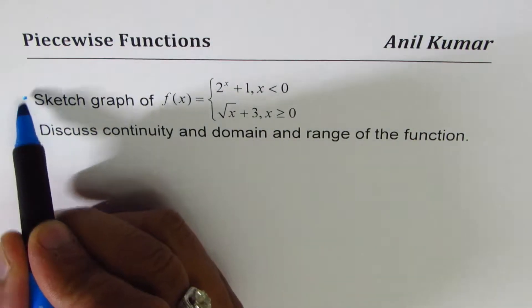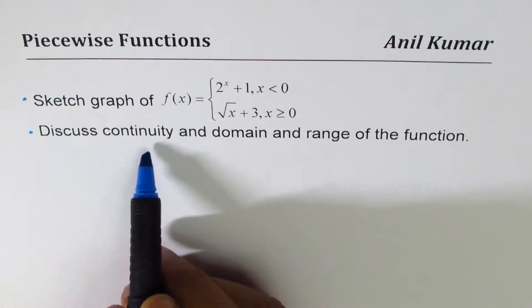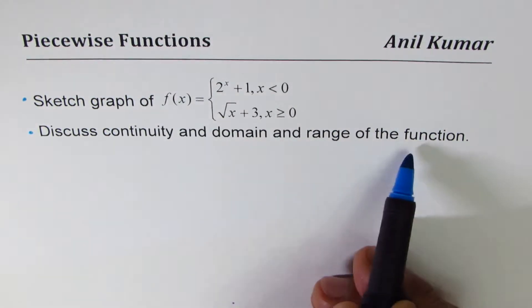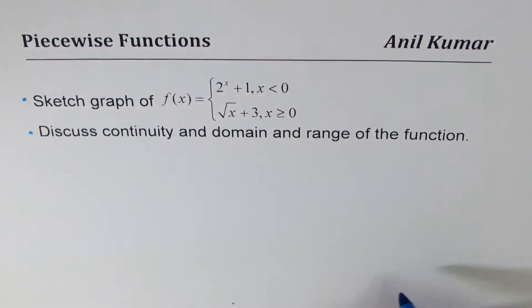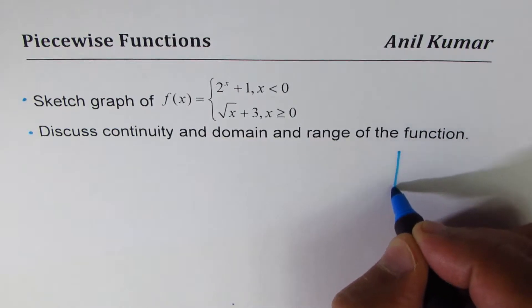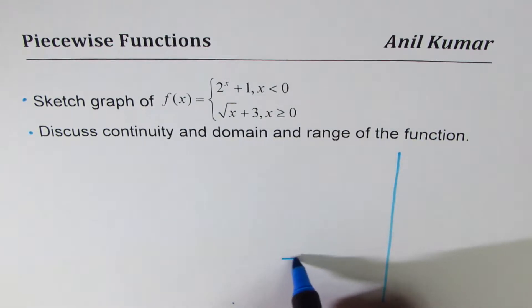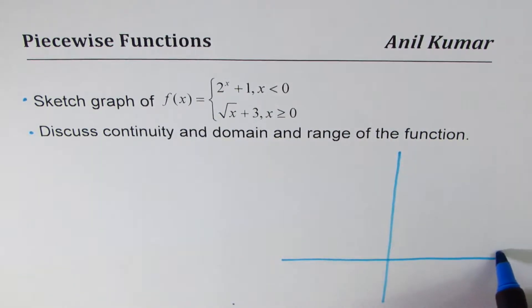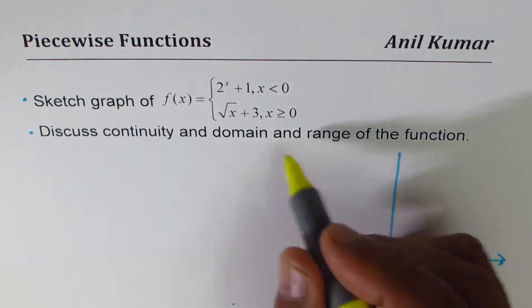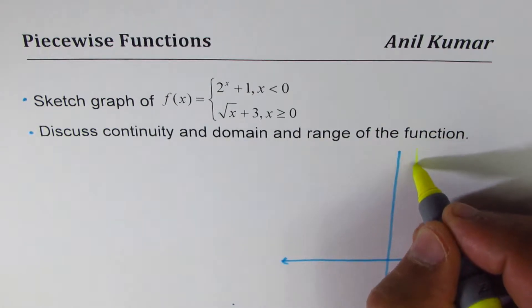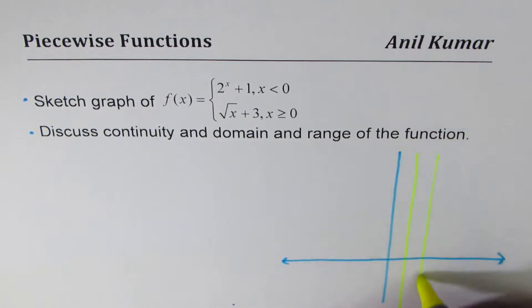So that's the first part and the second part is discuss continuity and domain and range of the function. Let's try to sketch it on the right side. Both functions are positive, so I'll take the x-axis kind of like this here. Let me just make a grid. We'll take a few values on the right side of zero and a few on the left side of 0.